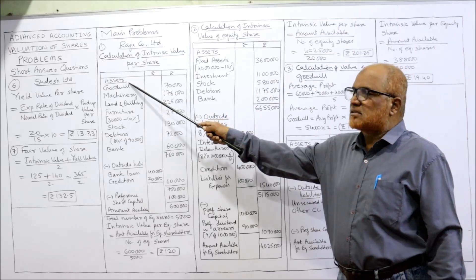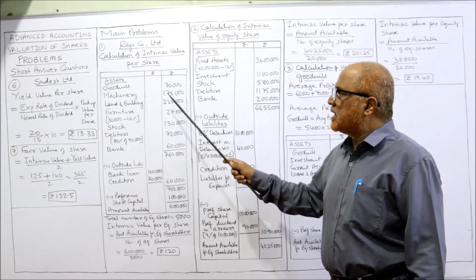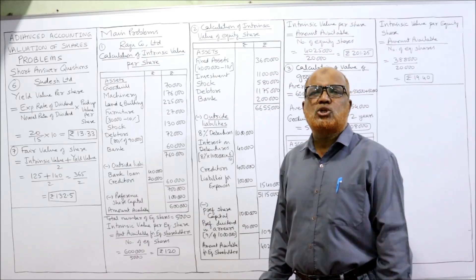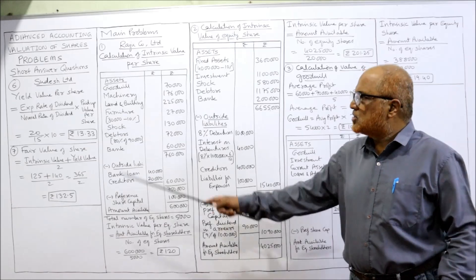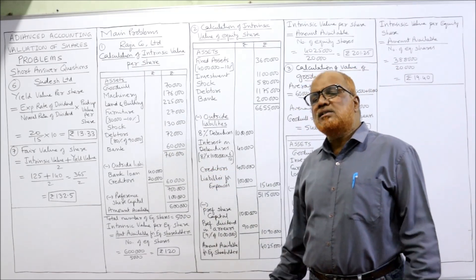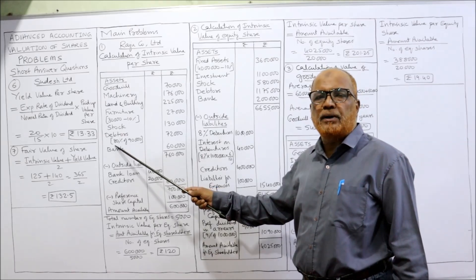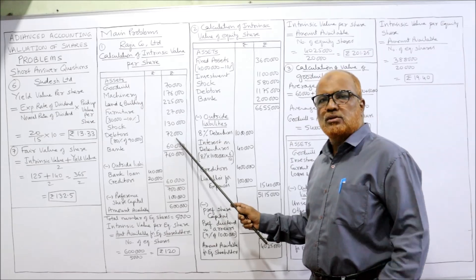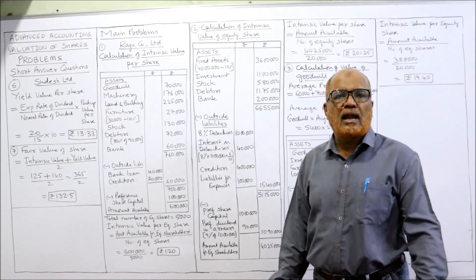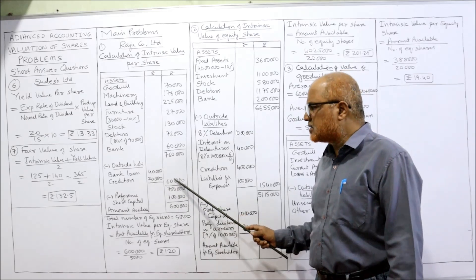Raju Company — calculation of intrinsic value per share. Assets: goodwill ₹70,000 (assessed value). Machinery present value ₹1,76,000. Land and building present value ₹2,25,000. Furniture: balance sheet value ₹30,000 minus 10% depreciation = ₹27,000. Stock ₹1,30,000. Debtors — total debtors ₹90,000, 80% recoverable = ₹72,000. Bank balance ₹60,000. Total assets ₹7,60,000. From this, deduct outside liabilities: bank loan ₹40,000, creditors ₹20,000 — only 2 outside liabilities. Subtract to get ₹7,00,000.